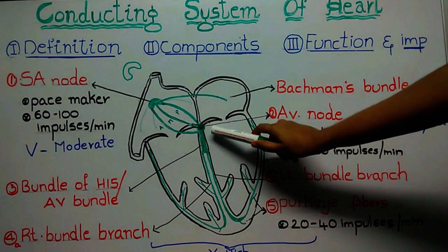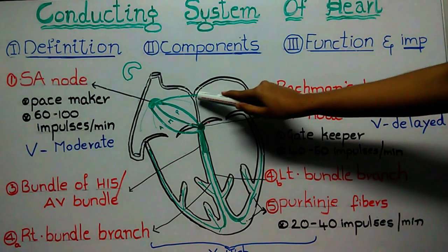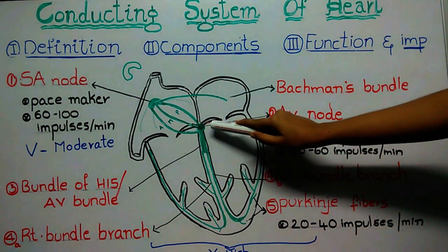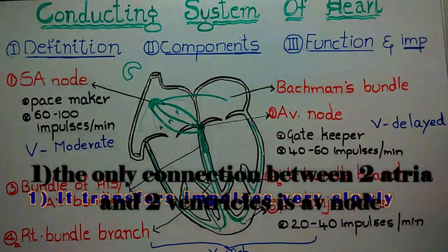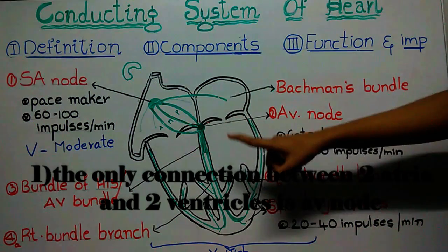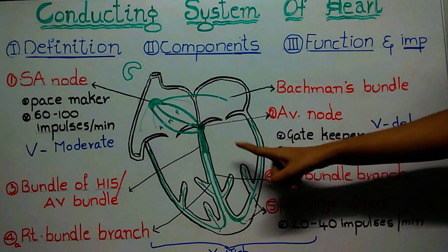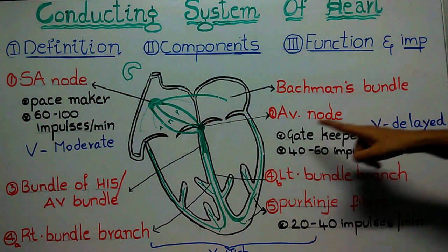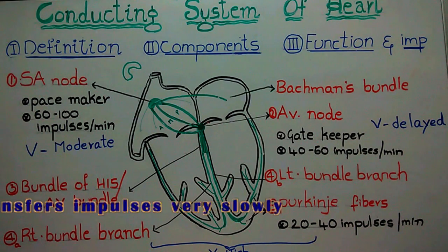The next node is the AV node, or atrioventricular node. It is smaller than the SA node and is present at the lower part of the atrial septum. The AV node has three very important features. The first important thing is that the only connection between the two atria and the two ventricles is the AV node. The impulses started in the SA node cannot reach the ventricles through any other pathway — the only way through which impulses can reach the ventricles is the AV node, so this AV node is called the gatekeeper.